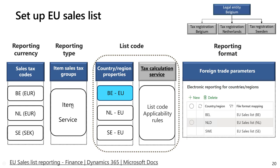First, you set up sales tax codes and select the tax code currency — the EU Sales List will be generated in the specified currency. Also, don't forget that you always have the option to exclude certain sales tax codes from EU Sales List reporting, which is set in the sales tax code as well. You should define the reporting type — either item or service — in the item sales tax group. The determination of whether a document should be transferred to the EU Sales List is defined by the list code assigned to the document, and now you have two options for how the list code is determined.